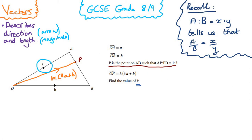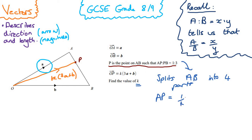Point P splits the line AB into four parts, so AP is a quarter of AB and PB is three quarters of AB. Note that if we add AP and PB we get back to AB. Let's use what we know and find AB. The vector AB is the vector A to O plus the vector O to B. If O to A is 'a' then A to O must be minus 'a', so AB equals b minus a.